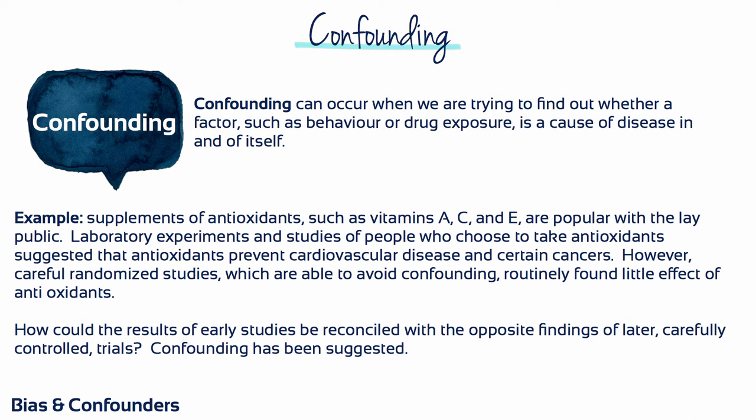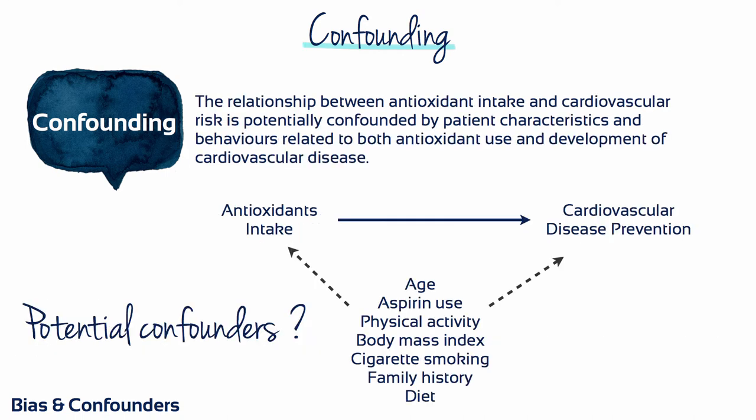How could the results of early studies be reconciled with the opposite findings of later, carefully controlled trials? Confounding has been suggested. People who take antioxidants on their own are likely to do other things differently than those who do not take antioxidants, such as exercise more, watch their weight, eat more vegetables and not smoke. And it may be these activities, not the antioxidants, that lead to lower death rates in the studies not randomising the intervention.